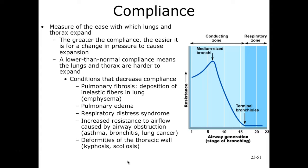When we have lower compliance than ideal, it's usually caused by some type of respiratory disorder or anatomical abnormality that causes an increase in resistance to airflow. This is associated with either a decrease in the size of the lumen of our bronchioles, like in asthma, or increased resistance caused by airway obstruction, asthma, bronchitis, or lung cancer. It could also be a decrease in compliance.